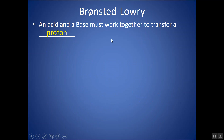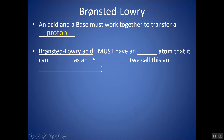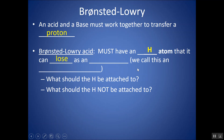Acid and base always work together to transfer a proton — one thing loses a proton, one thing gains a proton. To identify an acid, it must have an ionizable H atom that it can lose as H+, meaning in the bond it leaves behind its electrons and just the H+ comes off. We call this an ionizable H.